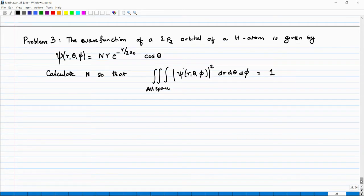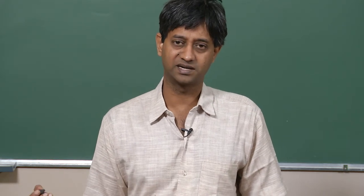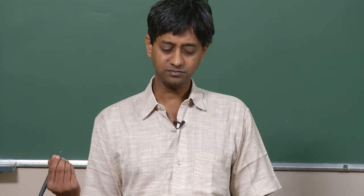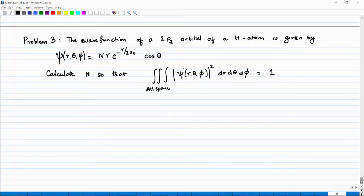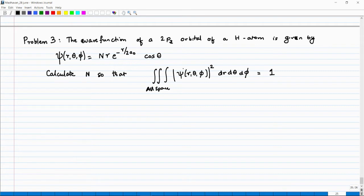The last problem has to do with spherical polar coordinates. Here we discuss how spherical polar coordinates appear naturally in the solution of the quantum mechanical hydrogen atom problem. The problem statement is: the wave function of a 2pz orbital of a hydrogen atom is given as ψ(r, θ, φ). Usually in the hydrogen atom problem the nucleus is taken as the origin, the electron position is expressed in spherical polar coordinates, and you must calculate N so that the integral of |ψ|² over all 3D space equals 1.